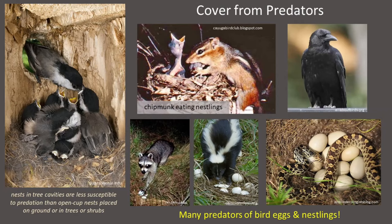Cover for nesting can also be called cover from predators, because predation of eggs and nestlings is a primary source of mortality for birds during the nesting season. Birds that nest in cavity trees are far less susceptible to predation than birds that make open-cup nests on the ground or in foliage. All sorts of animals — including snakes, raccoons, crows, blue jays, raptors, chipmunks, and squirrels — eat nestling birds and bird eggs. So birds are very strategic about where within specific vegetation layers they locate their nests to best hide them from predators.